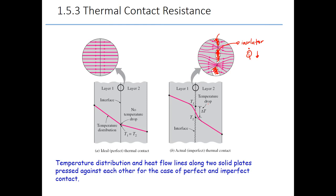For the actual situation, as you can see, there are temperature drops that we need to consider. This describes the ideal and also the actual thermal contact for multi-layer plane wall — the temperature distribution and heat flow lines along two solid plates pressed against each other for the case of perfect and imperfect contact.